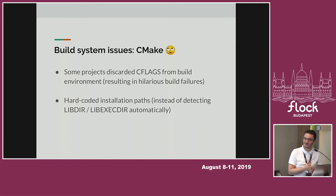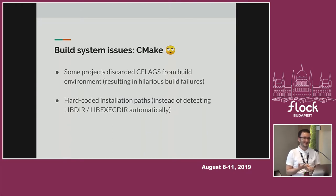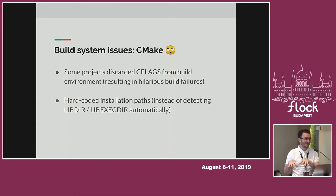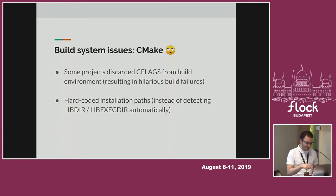Another issue in the build systems was that they hardcoded a lot of installation paths instead of detecting libdir and libexecdir automatically. This was all tailored to Ubuntu-specific paths which obviously don't work in Fedora, because they hardcode /usr/lib as libdir even for 64-bit systems. They also didn't install things to libexecdir because that's not really a thing in Ubuntu. But those things have also been fixed, so things are getting better.